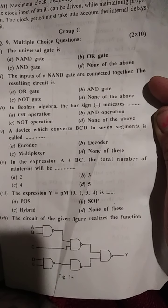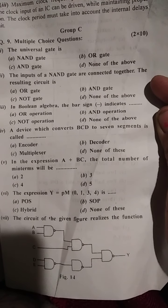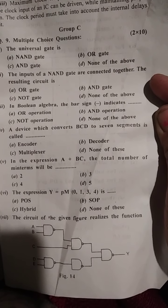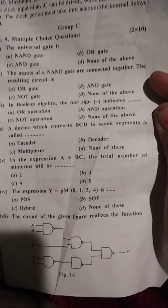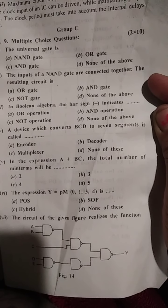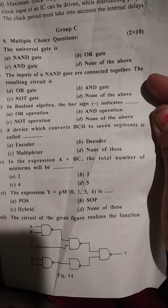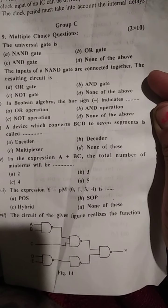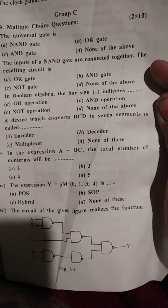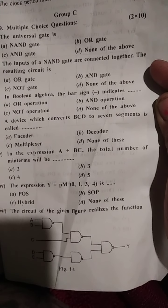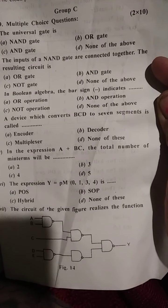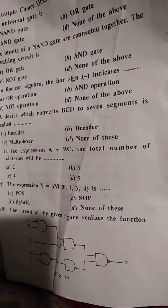In this expression A plus BC, there are three inputs A, B, C. The AND operation and plus which is OR operation, A will be the output. So in this A, BC, three OR operations. The expression Y equals PM 0, 1, 3, 4 is POS, product of sum.